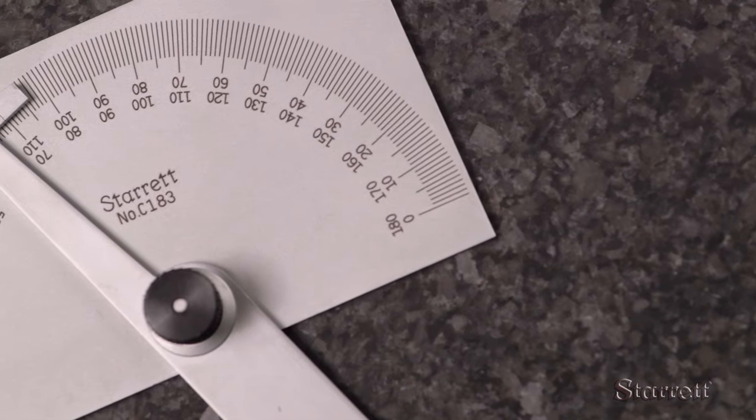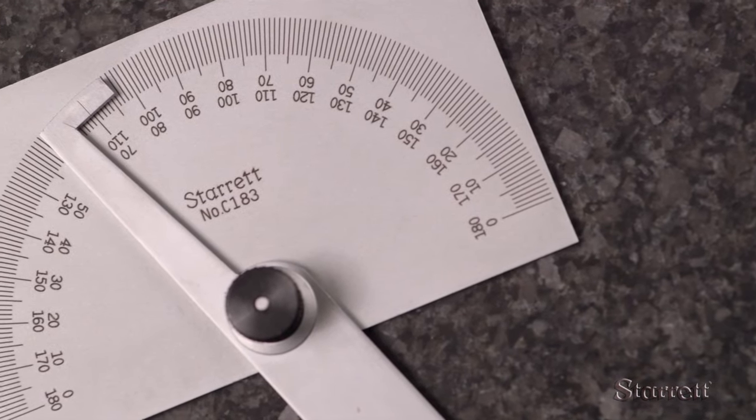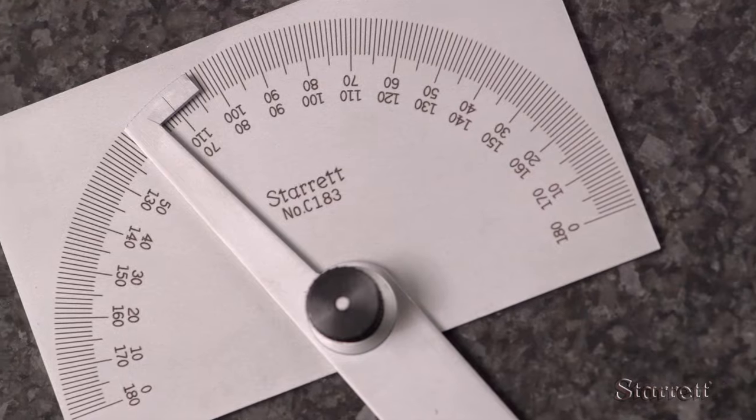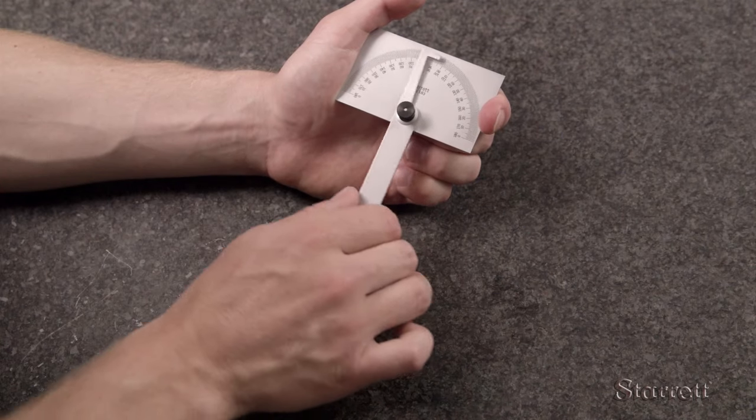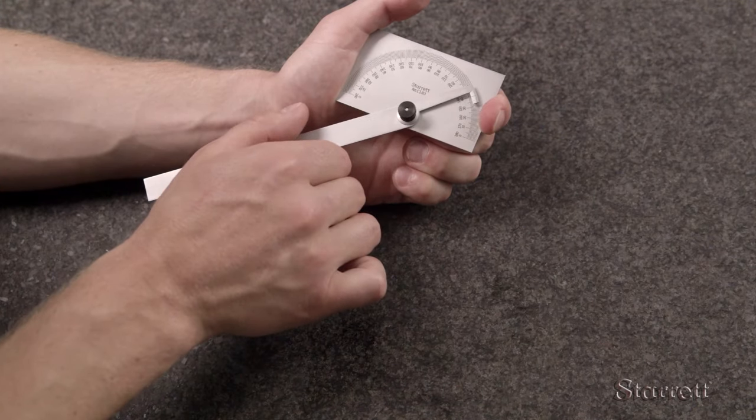The rust resistant satin chrome head finish makes the marked graduations and figures easy to read. The lock nut securely holds the six inch leg in any position.